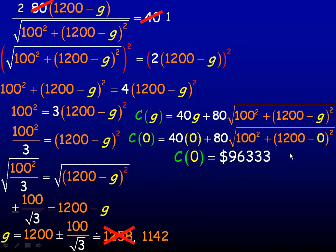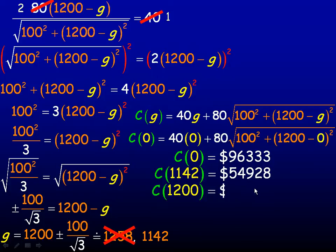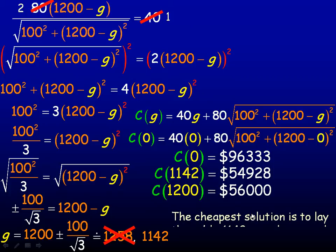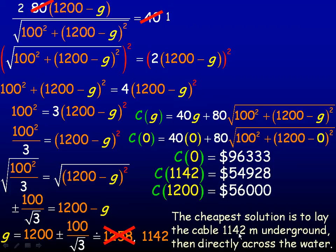And then if we do the 1142, so 1142 meters underground and then a fairly short distance across the water, we get 54,928. And if the other end of the interval was the 1200, so if g is 1200, the cost for 1200 is 56,000. So notice there's a really big difference between the 0 and the 1142. So this is the best solution here. So the cheapest solution is to lay the cable 1142 meters underground and then directly across the water.